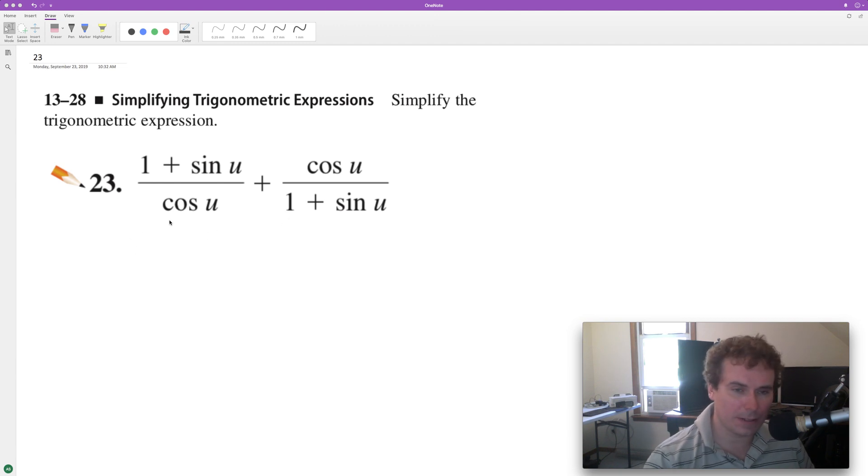So what we're going to do here is we need a common denominator before we can add these, so it looks like we're going to have to put 1 plus sine of u